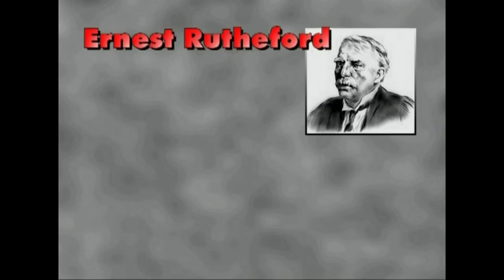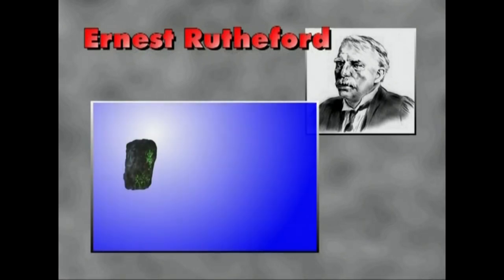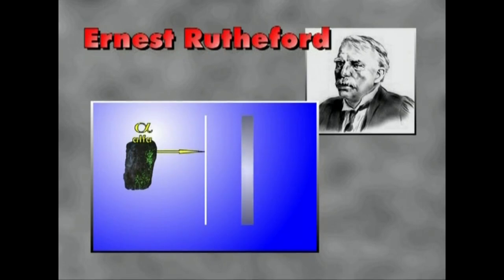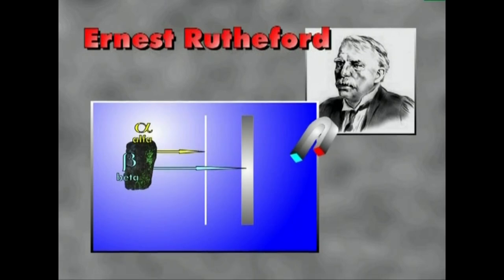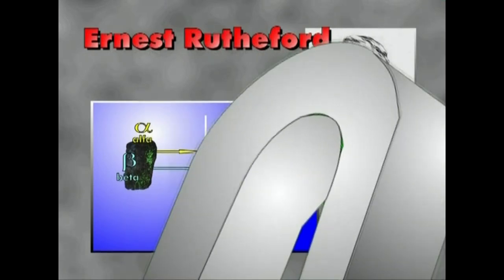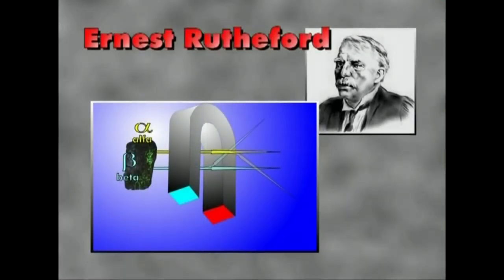Mila zortziehun eta larogeita emeretzian, Rutherford britainiarrak zera aurkitu zuen: erradiazioen izpi batzuk paper horri mehe batek geldi zitzakeela, baina beste batzuk aluminio horri batean bost milimetroraino barnera zitezkeela. Horretaz gain, eremu magnetiko bat ezarriz gero, bi erradiazioak dezbideratu egiten zirela ohartu zen.